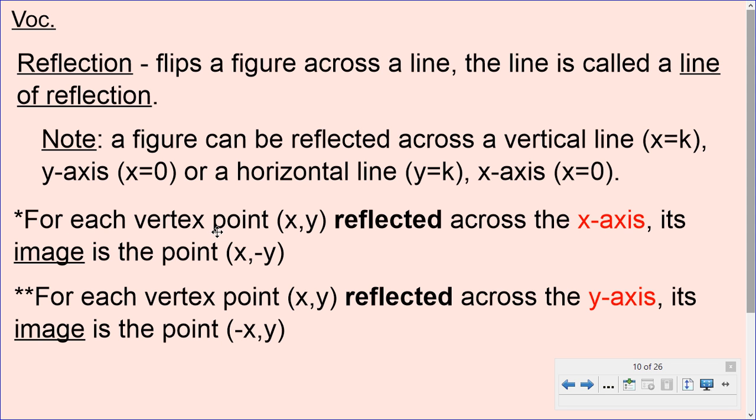For each vertex point (x, y) reflected across the x-axis, its image is the point (x, negative y). So notice the x stays the same but the y is opposite when you reflect against the x-axis, so it's from top to bottom.